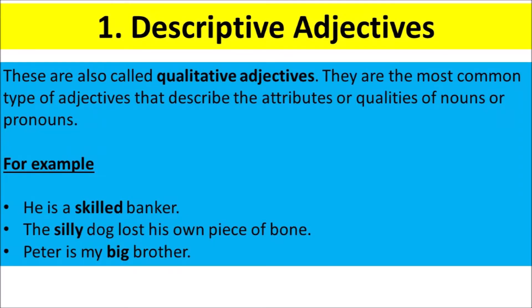Descriptive Adjectives. These are also called qualitative adjectives. They are the most common type of adjectives that describe the attributes or qualities of nouns or pronouns. For example, He is a skilled banker. The silly dog lost his own piece of bone. Peter is my big brother.